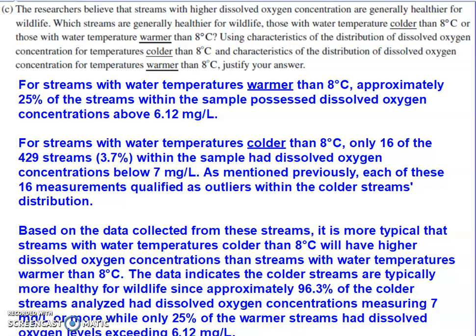I kind of formalized everything here. I said that only 25% of the streams from the warmer sample will have dissolved oxygen concentrations above 6.12 milligrams per liter. But then 16 off of that total of 429 are 7 milligrams per liter or lower, so only 3.7% are 7 milligrams per liter or lower. So the complement of that would be 96.3%. So 96.3% of the colder streams had dissolved oxygen concentrations above the upper quartile for the data set from the warmer streams. Therefore, we're looking at the colder streams being the healthier of the two for wildlife.